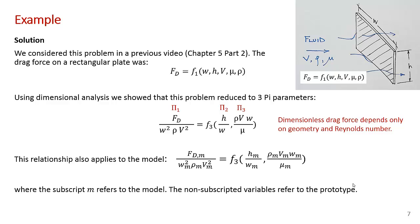This problem harks back to a previous video — Chapter 5, Part 2 — where we showed that the drag force on a rectangular plate was a function of the width, the height, the free stream velocity, and the fluid properties (dynamic viscosity and density). Using dimensional analysis, this problem reduced down to three dimensionless pi parameters: the dimensionless drag force (drag force divided by a stagnation pressure times an area) is a function of the aspect ratio of the plate (height to width ratio) and the Reynolds number. So drag force depends only on the geometry and on the Reynolds number. The same relationship applies to the scaled model.